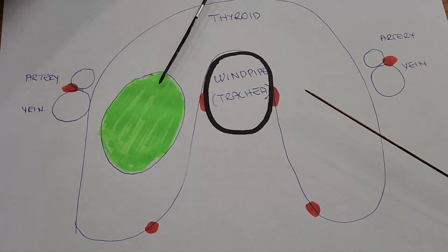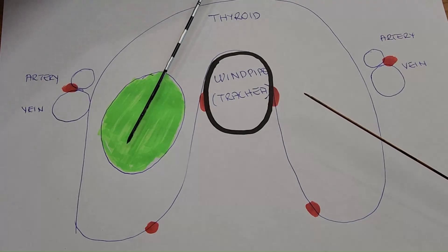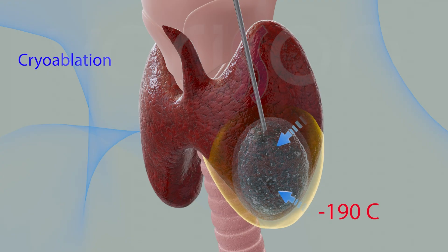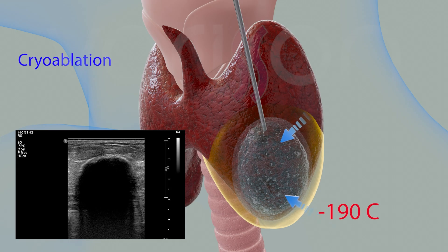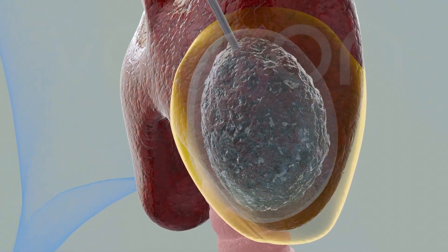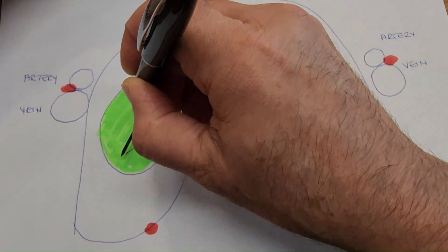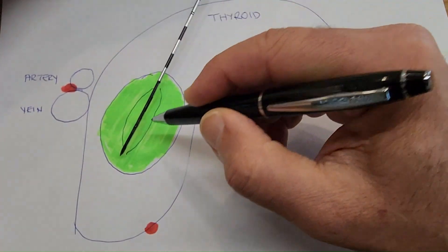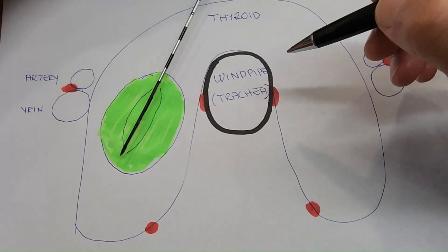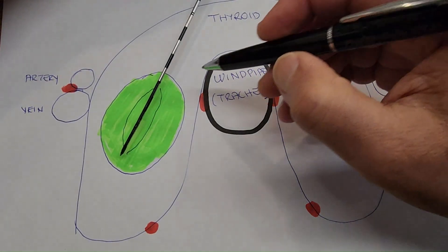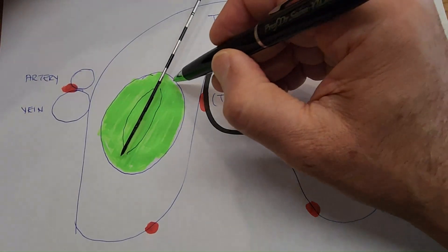We place the needle in the center of the nodule to be ablated and we do not move it. When we turn on the machine, an ice ball forms around the needle slowly, and we can see this ice ball growing during the procedure very easily on ultrasound.